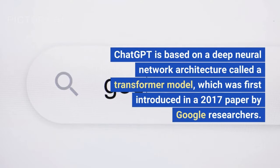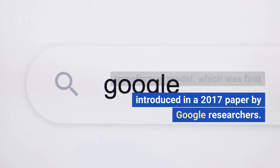ChatGPT is based on a deep neural network architecture called the Transformer model, which was first introduced in a 2017 paper by Google researchers.